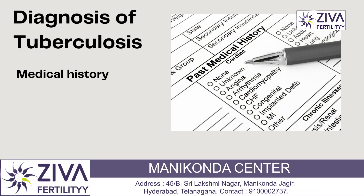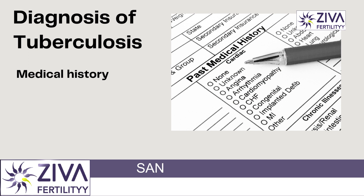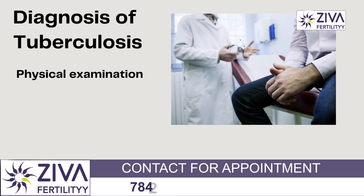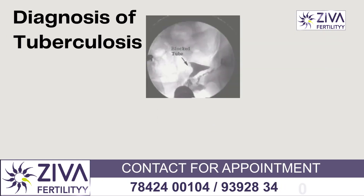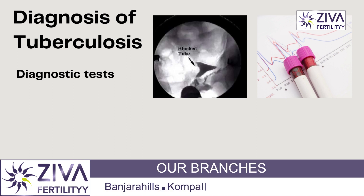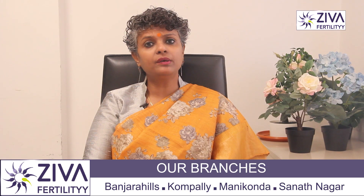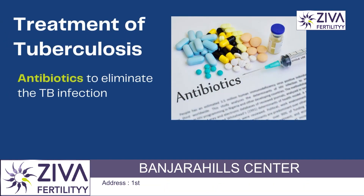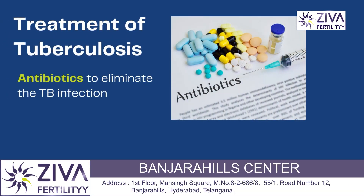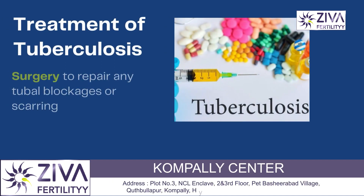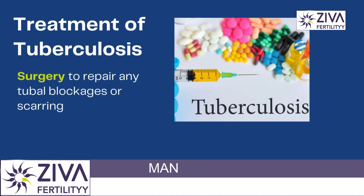Diagnosis of TB-related infertility involves a combination of medical history, physical examination, and diagnostic tests such as ultrasound, blood tests, and tubal patency tests. Treatment typically involves a combination of antibiotics to eliminate the TB infection and surgery to repair any tubal blockage or scarring.